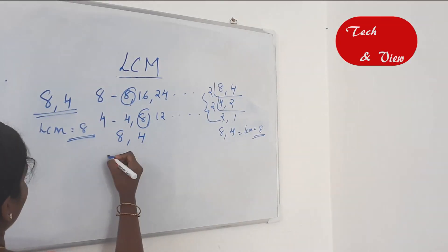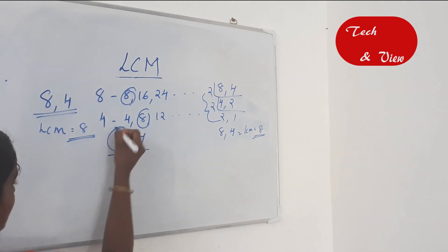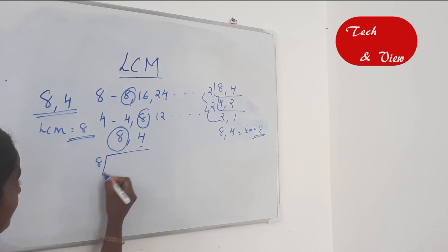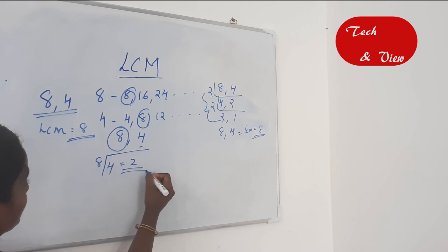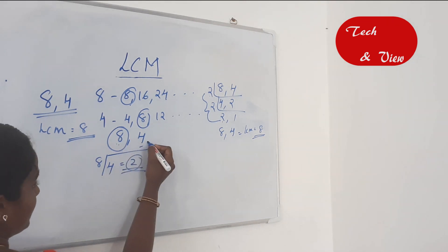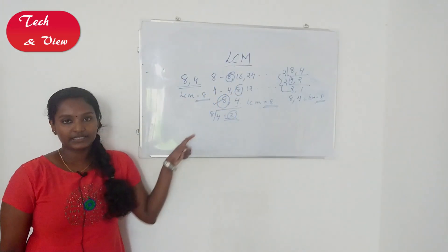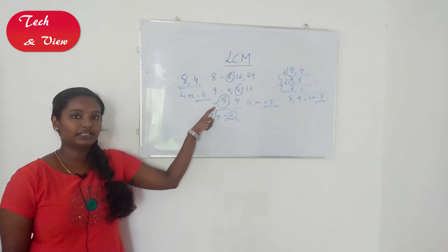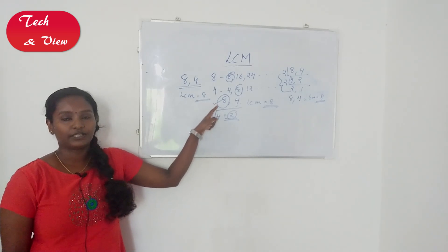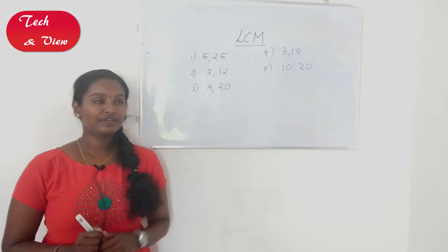For 8 and 4, the greatest number is 8. If the greatest number is divisible by the remaining numbers, then the greatest number is the LCM. For example, 8 divided by 4 is 2 — fully divisible. So LCM is 8. If you have two numbers and the greatest number is divisible by the others, that greatest number is the LCM.